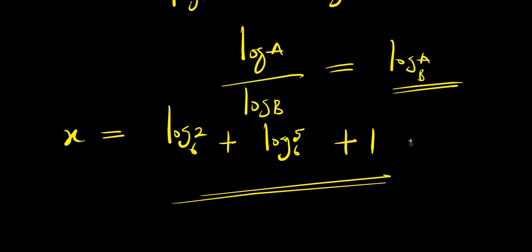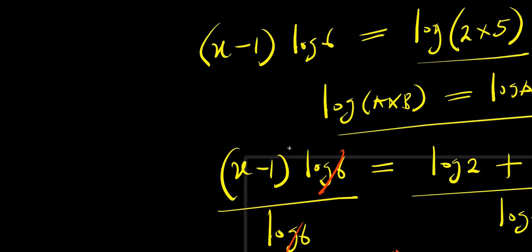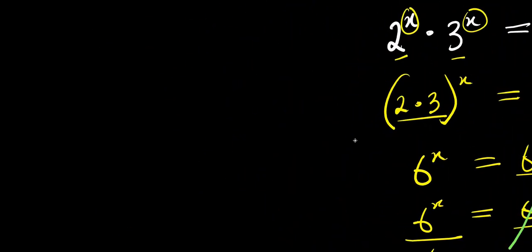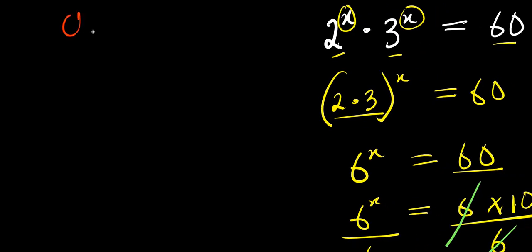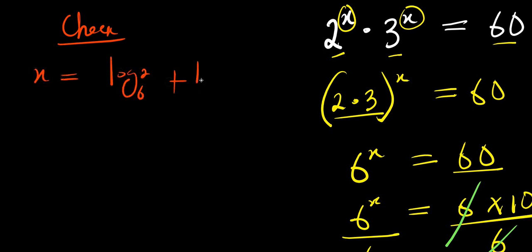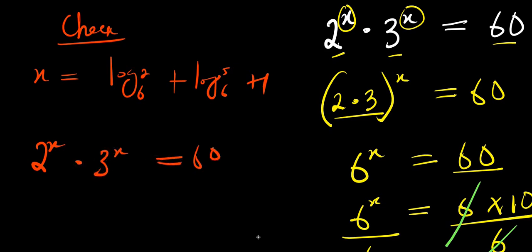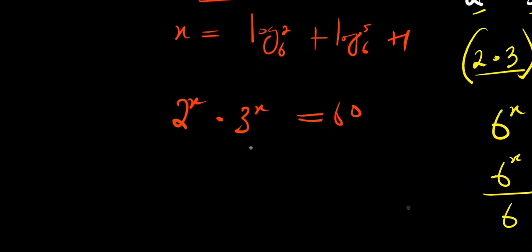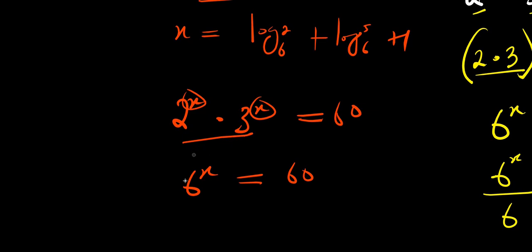So this becomes our solution. Now the next step will be for us to check. Using x equals log 2 to the base of 6 plus log 5 to the base of 6 plus 1, we have 2 to the power x times 3 to the power x equals 60. Let me simplify this: this is 6 to the power x equals 60. Remember I take the common exponent and multiply the bases — 2 times 3 is 6, so 6 to the power x equals 60.